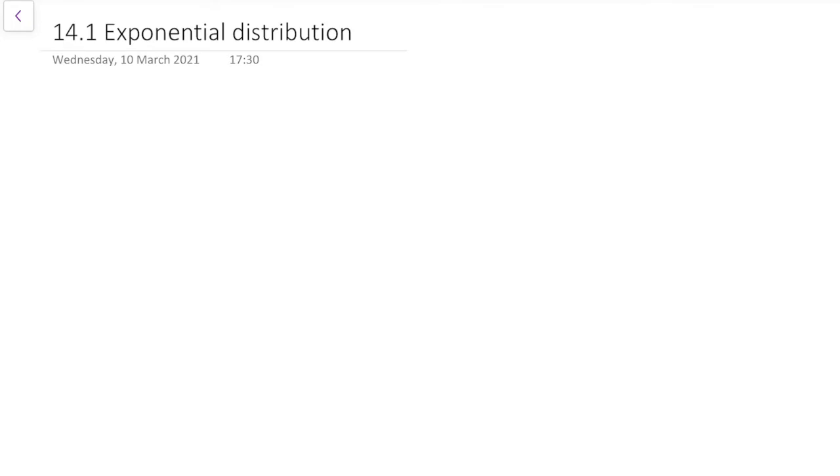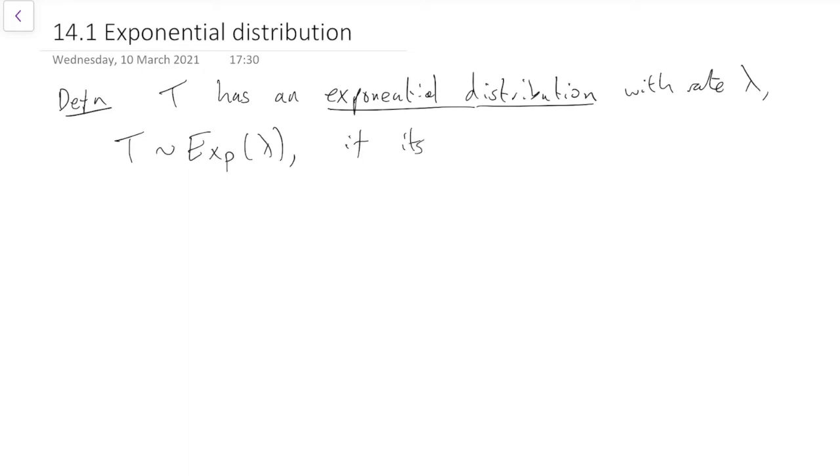Let's start by reminding ourselves of the definition of the exponential distribution. T has an exponential distribution with rate lambda, written as T~Exp(λ). Its PDF probability density function is f(t) = λe^(-λt) and that's defined for positive real numbers t.